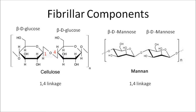The most common type of fibrillar component is cellulose, whose monomeric unit is β-D glucose. Many β-D glucose units are joined by 1,4 linkages to form the complex polymer cellulose, which is found in cell walls of higher plants and also of algae. Another fibrillar component is manan, a polymer of 1,4 linked β-D mannose, which is present in some siphonaceous green algae and in Porphyra, which is a red alga.